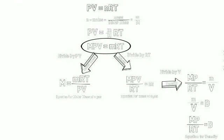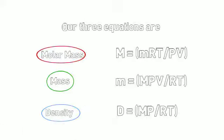What you've seen here is how we can take the simple equation PV equals nRT and rearrange it into three different equations that allow us to solve for mass, molar mass, and density.